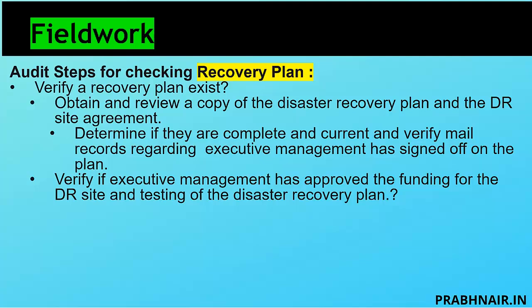Email acceptance from senior management is considered a valid plan approval. We need to verify if executive management has approved funding for the DR site and testing of the disaster recovery plan. We look for the business case submitted by the DR coordinator, and the email reply from senior management approving the budget. In an internal audit — the third line of defense — management wants to know whether things were delivered as per the budget, whether the budget was exceeded or underrun, and if underrun, where the money went.